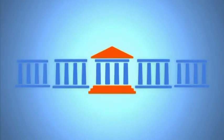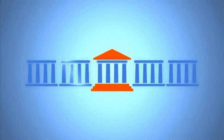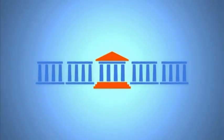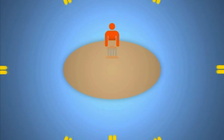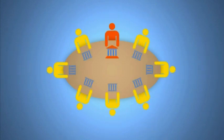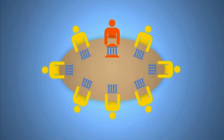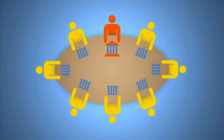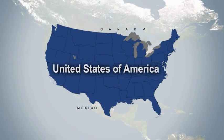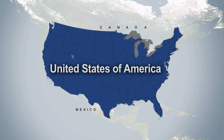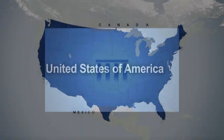Now that we have a better understanding of how federal countries are structured, we can proceed to learn about how powers are divided in federal countries. Once a federal country has its constituent units, the big question is to decide who does what — what is the federal government's role and what is the role of other governments? No two federal countries are alike in how they do this, but there are clear patterns in the way federal countries divide powers.